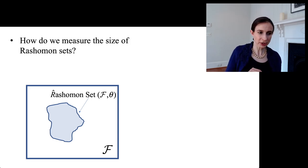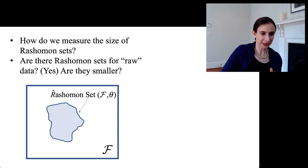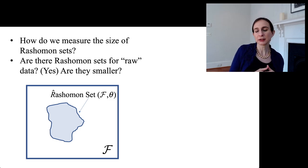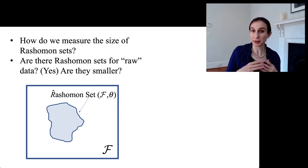I want to come back to this question of how we measure the size of Rashomon sets. And in particular, I want to know if there are Rashomon sets for raw data. And I think the answer to this question is yes. The reason why I think that is because we've found that there are interpretable neural networks that are just as accurate as the black box neural networks. But of course, they're interpretable. So in other words, we've imposed a set of constraints to change the model substantially, but still stayed in the Rashomon set.